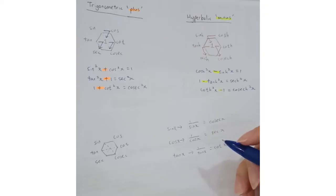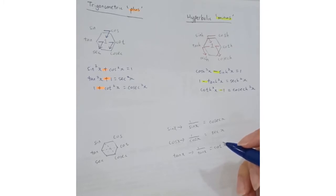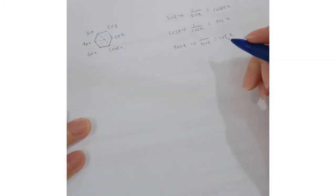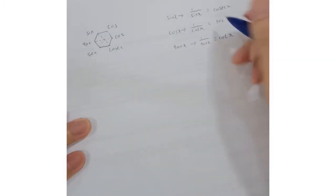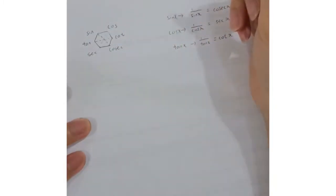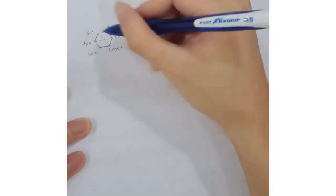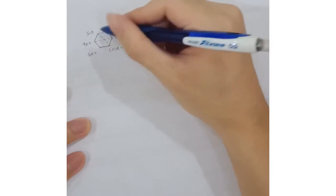In this video, I will talk about how to memorize some basic formulas of trigonometric and hyperbolic functions without actually referring to the formula table. The first thing to do is to always draw out a hexagon.